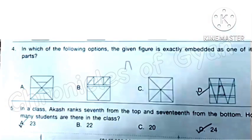Question 4: In which of the following options is the given figure exactly embedded as one of its parts? This is the given figure and we have to find it among A, B, C, and option D. Correct answer is option D.